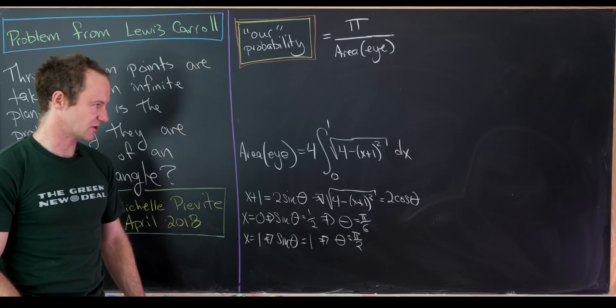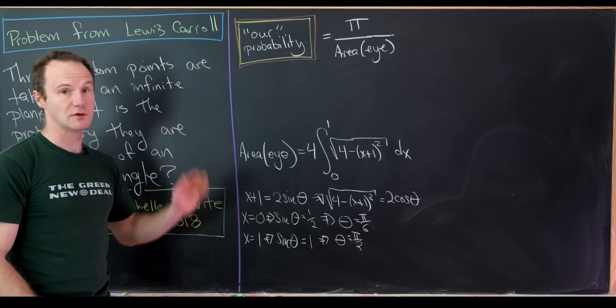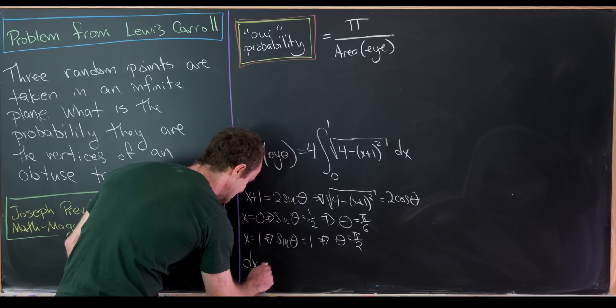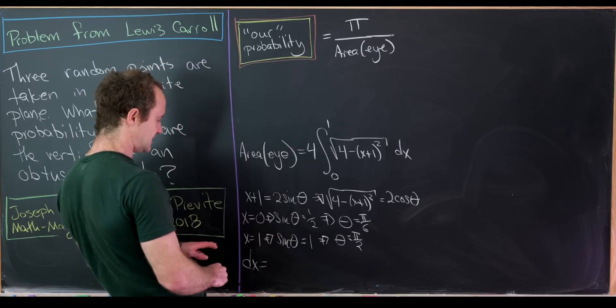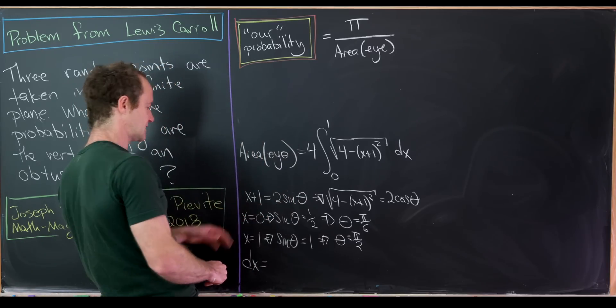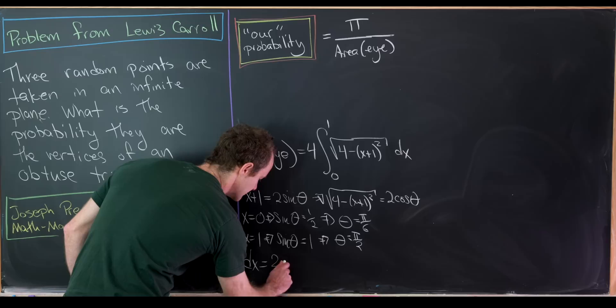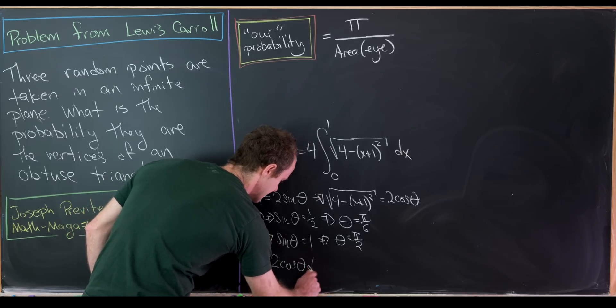Let's also notice when x is equal to 1, we get sine of theta is equal to, also 1, which means theta equals pi over 2. So that's our other bound of integration. That wraps up almost everything that we need. We also need our dx. So our dx, by differentiating this formula, will be 2 times cos theta d theta.